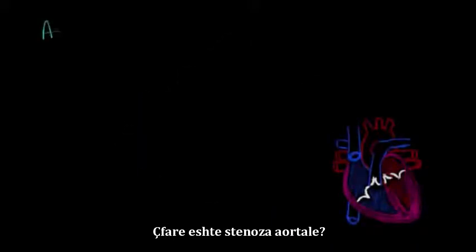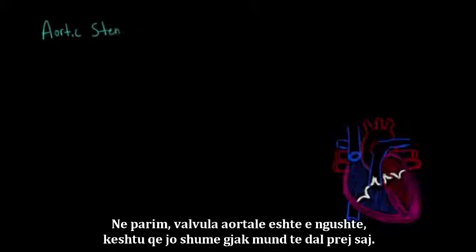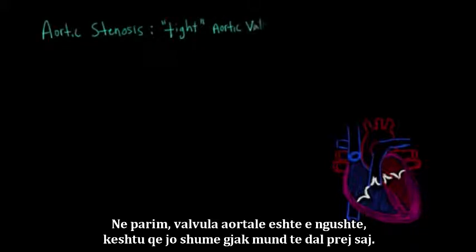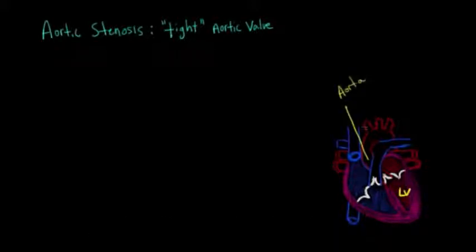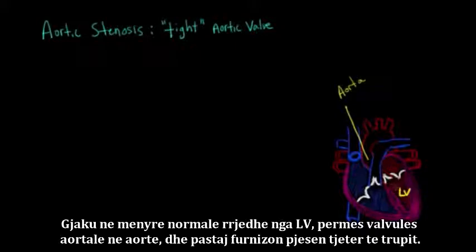So what is aortic stenosis? Very basically, it's having a tight aortic valve, so not enough blood can get through. I'll label here the LV, the left ventricle, and then I'll label the aorta. Blood normally flows from the LV through the aortic valve, into the aorta, and then supplies the rest of the body.